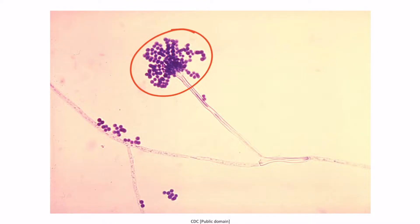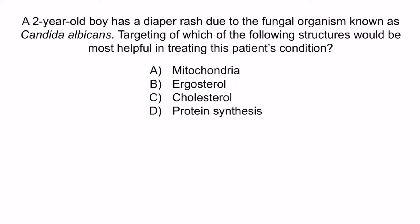Let's wrap up this video with a question. A two-year-old boy has a diaper rash due to the fungal organism known as Candida albicans. Targeting of which of the following structures would be most helpful in treating this patient's condition? A: mitochondria. B: ergosterol. C: cholesterol. Or D: protein synthesis. The key takeaway is that this patient has a fungal infection, so we must figure out which structure is unique to fungi. The correct answer is B, ergosterol. This is describing the mechanism of nystatin, which can be used to treat diaper rash.